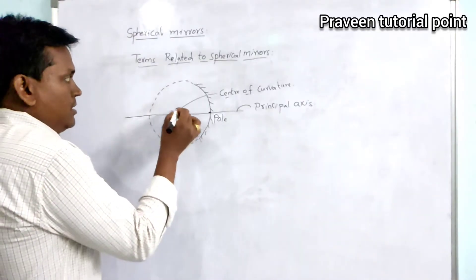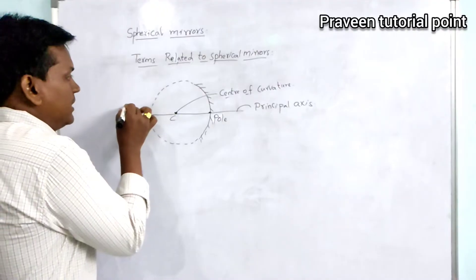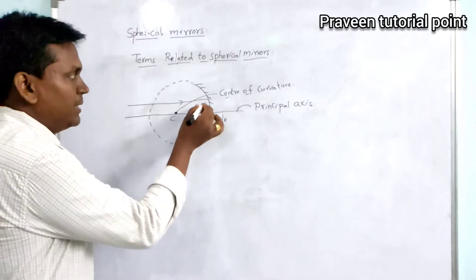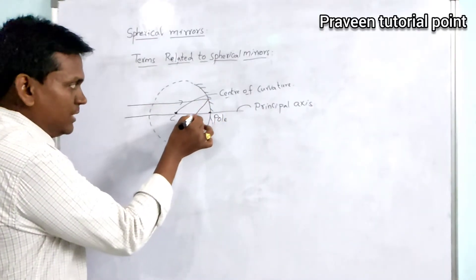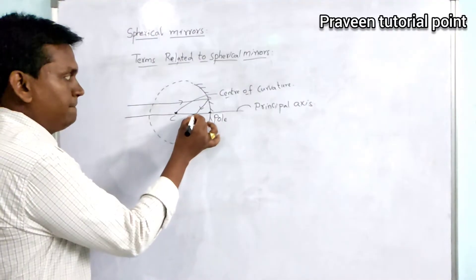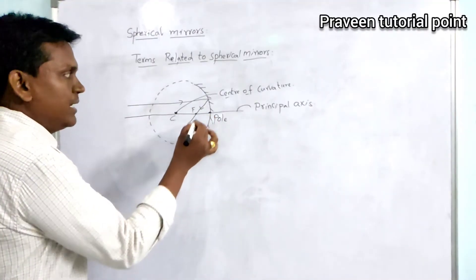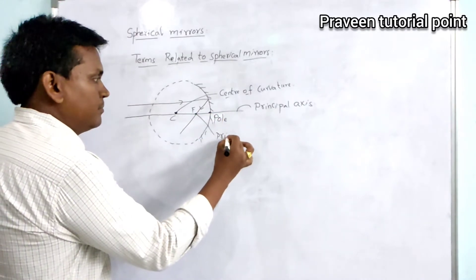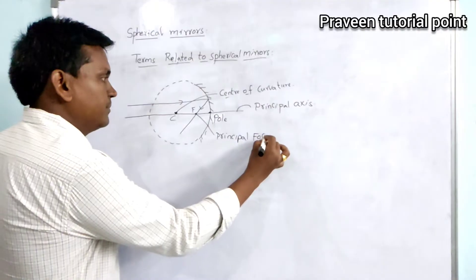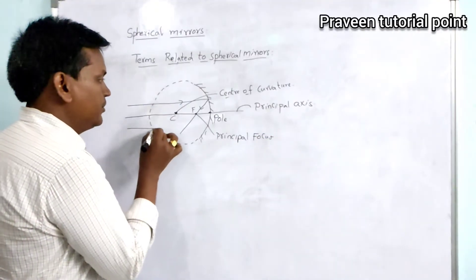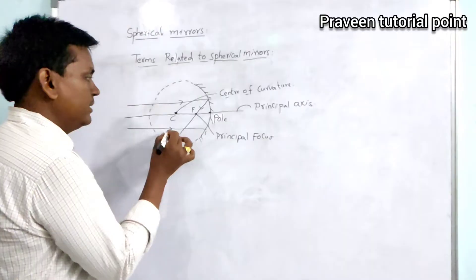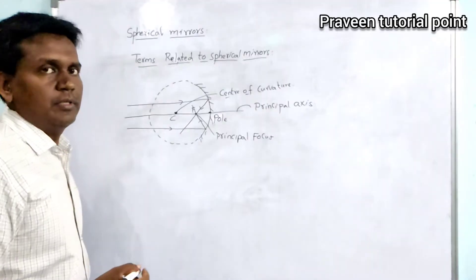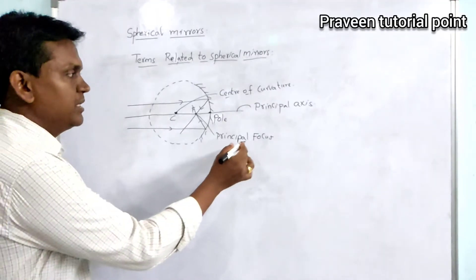If we draw a ray parallel to the principal axis, after reflection it will pass through a particular point. This point is called the principal focus. Any ray drawn parallel to the principal axis will, after reflection, pass through that same focus — that point is called the principal focus.